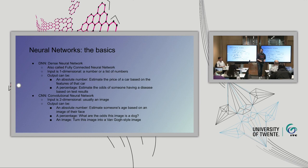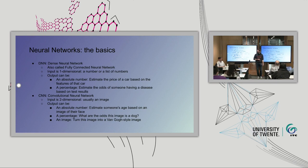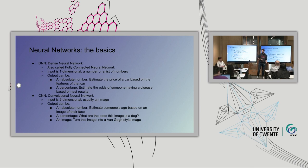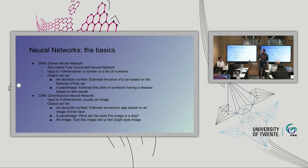The two basic formats of neural networks are the dense neural network and the convolutional neural network. A dense neural network has a one-dimensional input — you put in a number or a list of numbers, and from that you can get either absolute numbers, for example estimating the price of a car based on its features, or a percentage, such as estimating the odds of someone having a disease based on blood values, age, and other factors.